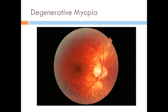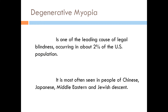Now let's tackle degenerative myopia. This condition usually starts at birth, but most often begins during the preteen years, and it is believed to be a hereditary type of myopia. It is one of the leading causes of legal blindness, occurring in about 2% of the US population, and is most often seen in people of Chinese, Japanese, Middle Eastern, and Jewish descent — making it more prevalent among Asian races.